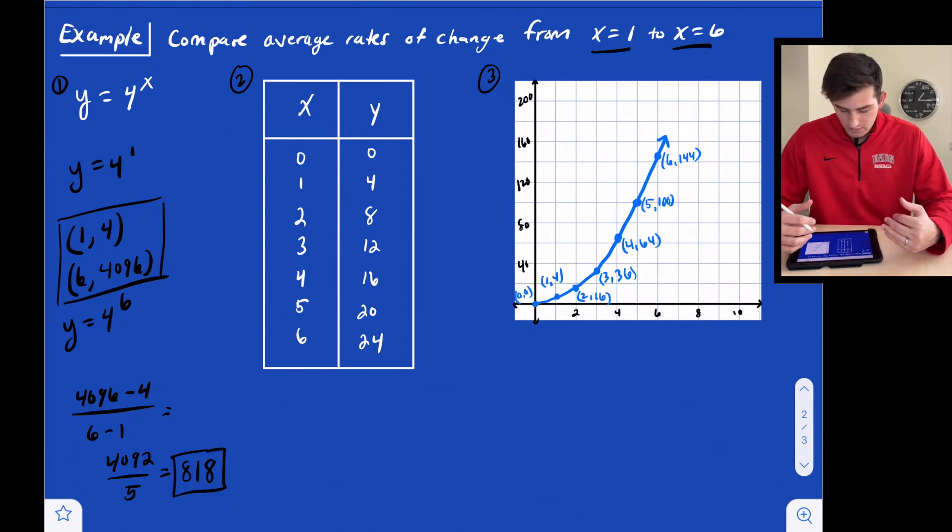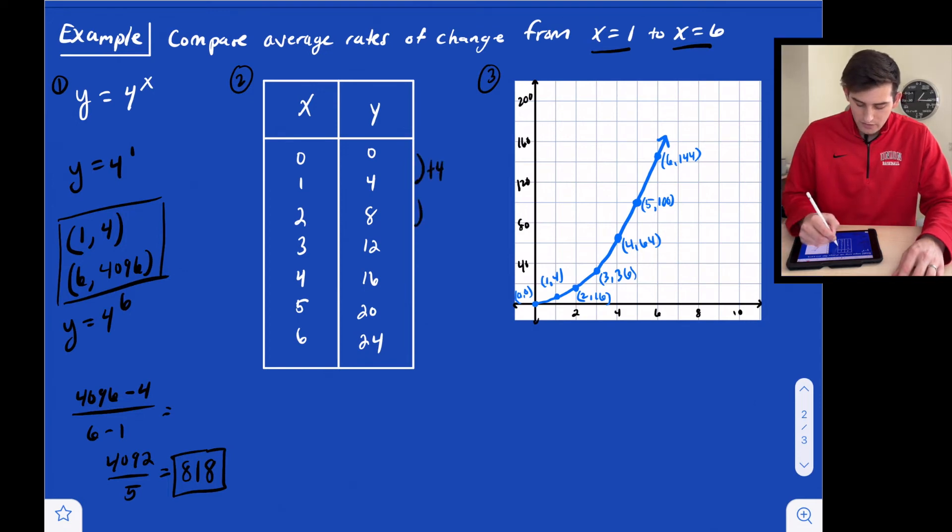Now let's look at our table here. We have x values 0, 1, 2, 3, 4, 5, 6, and our y values are 0, 4, 8, 12, 16, 20, and 24. If you notice, we are just adding 4 each time. So this is going to be a linear function. We can go back to example one and say that this was exponential. So we have exponential and we have linear.